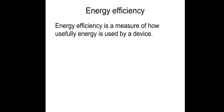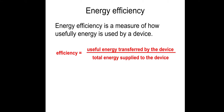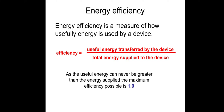Efficiency is a measure of how usefully energy is used by a device. Efficiency equals useful energy transferred, or useful power, divided by total energy supplied or total power supplied. Useful energy can never be greater than the energy supplied, so the maximum possible efficiency is 1.0 — though in practice it's always a decimal less than 1. If you get a number greater than 1, it's definitely wrong.